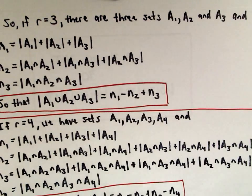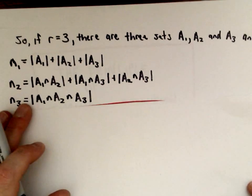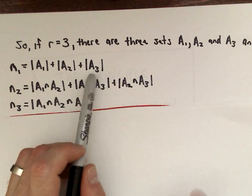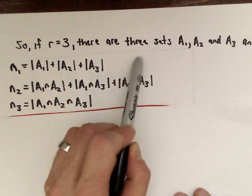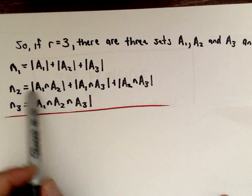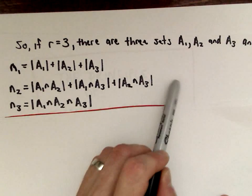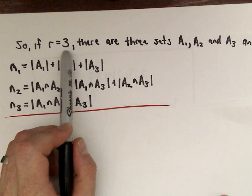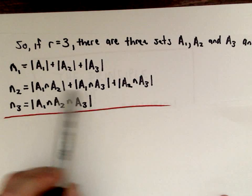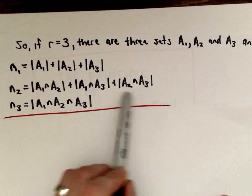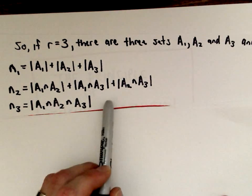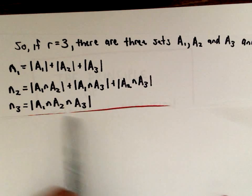For example, when we had three sets, n sub 1 is the number of elements in A1 plus A2 plus A3 — that's C(3,1), three sets choosing one. N sub 2 is C(3,2) — we look at the intersections pairwise: A1 and A2, plus A1 and A3, plus A2 and A3. And n sub 3 is C(3,3), just one term — picking all three sets.